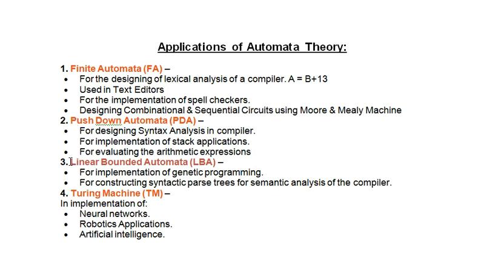The next machine, a little more powerful than pushdown automata, is linear bounded automata. It is used for implementation of genetic programming. Its mechanism is similar to pushdown automata but with some differences. Linear bounded automata is also used for the construction of syntactic parse trees, which you will learn about in Unit 3. With parse trees you can generate particular streams or attributes, and for that, the concept of semantic analysis is also needed.